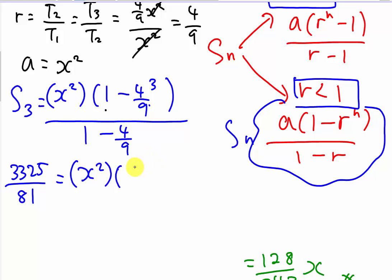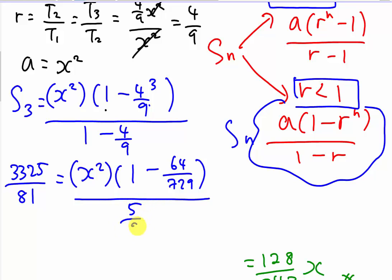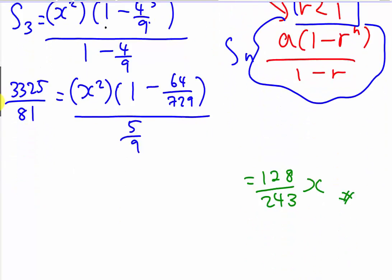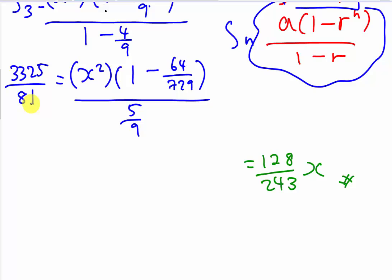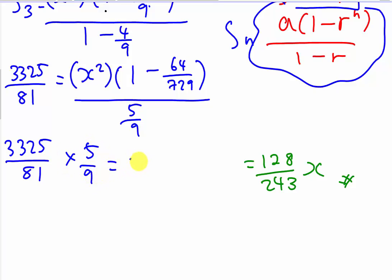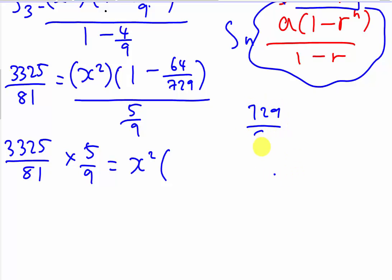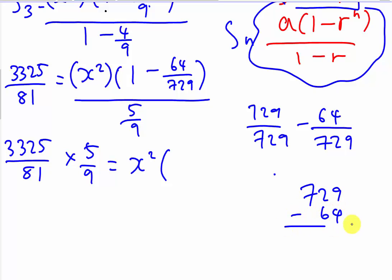You can use the calculator to solve this one. So basically this is 729/729 minus 64/729, because I make them have the same denominator. So 729 minus 64 — doing it manually: that's 665 over 729.